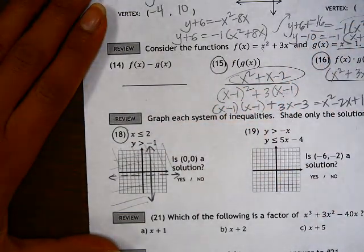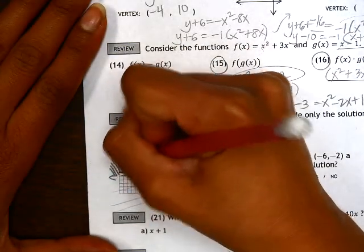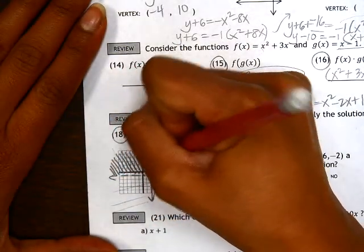So our final solution region would be this darkened area where the two overlap.